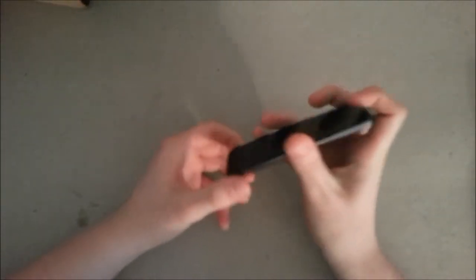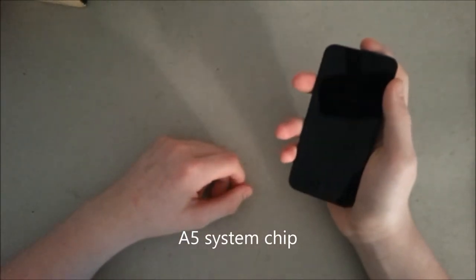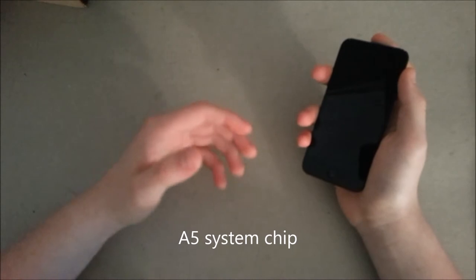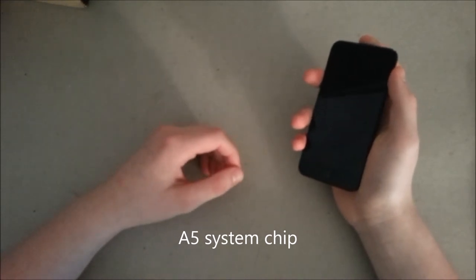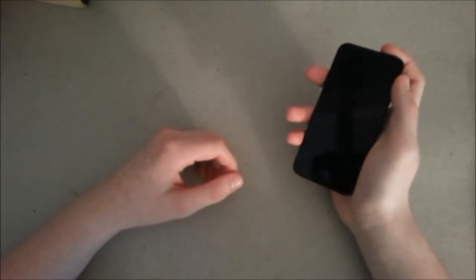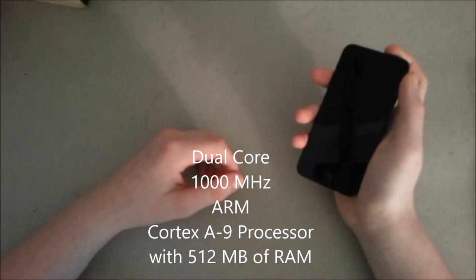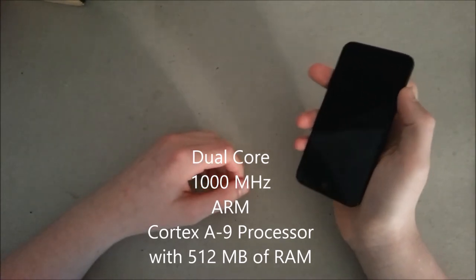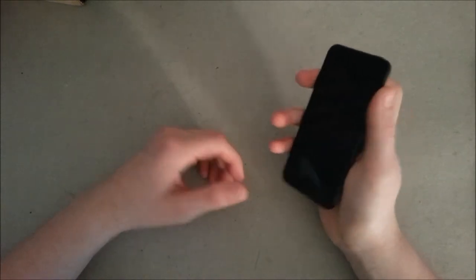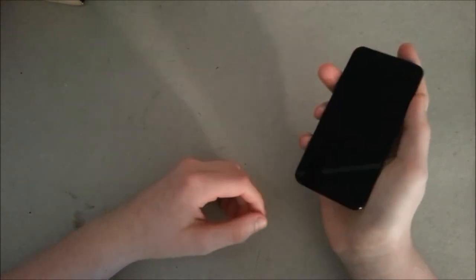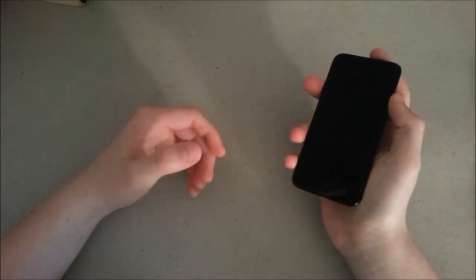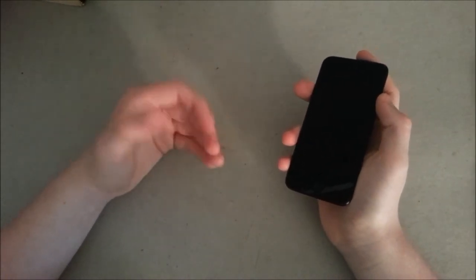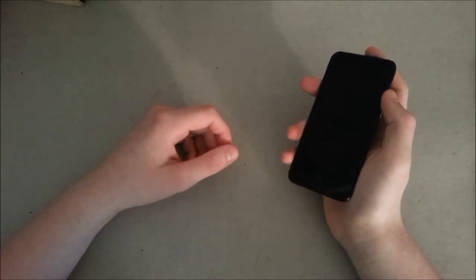So the internals of the actual device, it has an A5 system chip. So it's a pretty fast chip, and it can handle quite a bit of multitasking. The processor is a dual-core 1000 MHz ARM Cortex A9 processor with 512 megabytes of memory. And this is the 32GB version, but there is a 64GB flash memory and a 16GB flash memory as well.